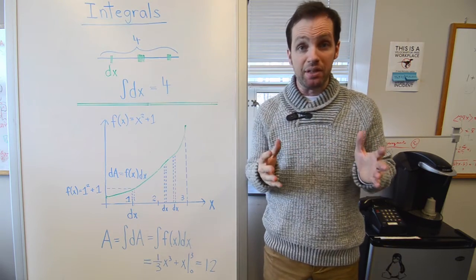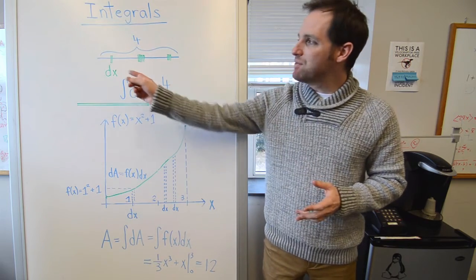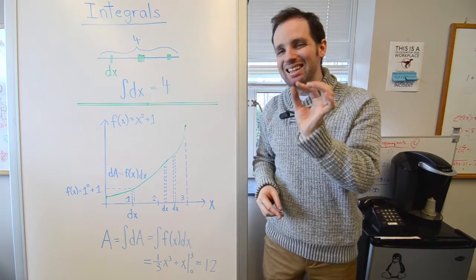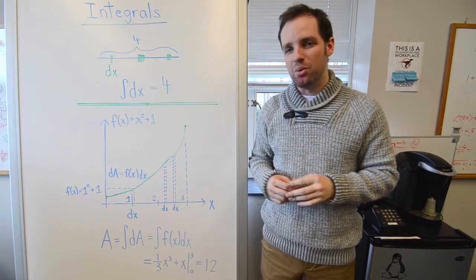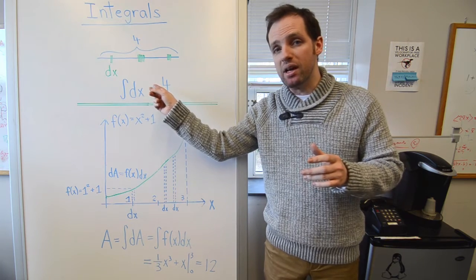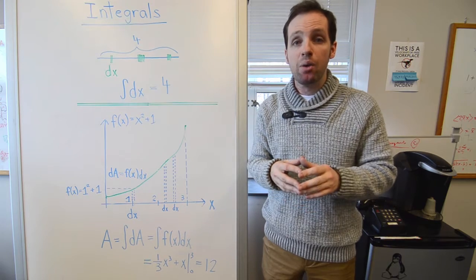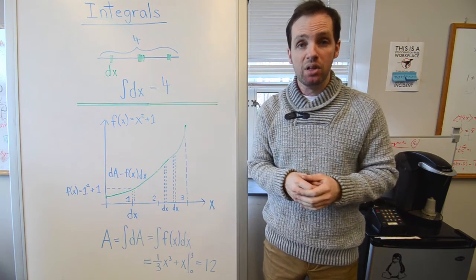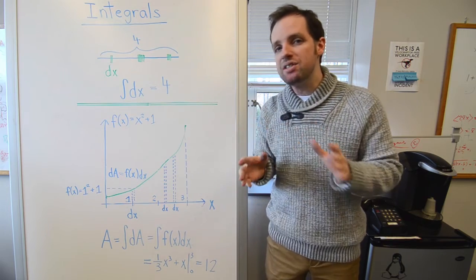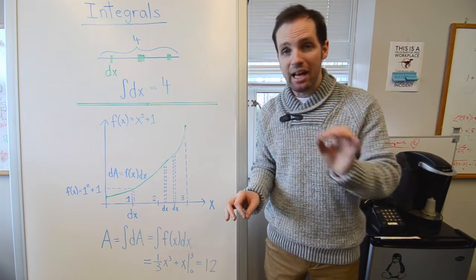To see an example of what this means, consider this line of length 4 that I've drawn. I've divided it into an infinite number of tiny little infinitesimal lengths which I've labeled dx. Now if I were to integrate or sum all of these dx's, all of these little lengths together, I would recover the total length of the line, or 4. Now notice, in this example the integral has absolutely nothing to do with the area under a curve.